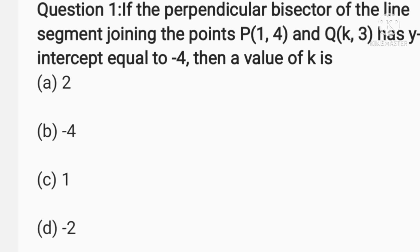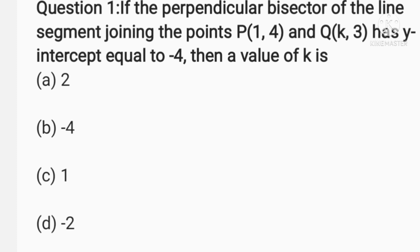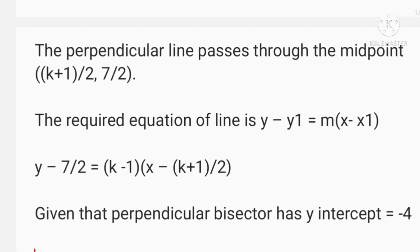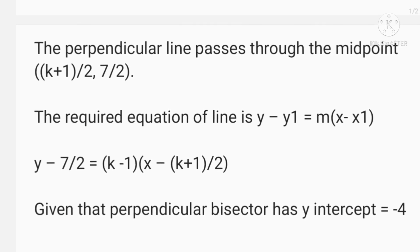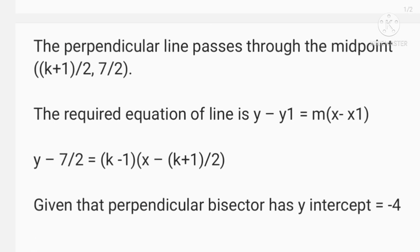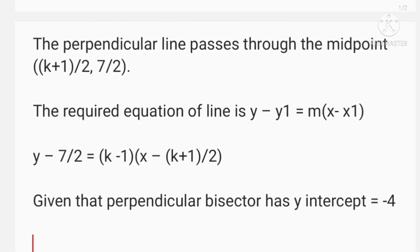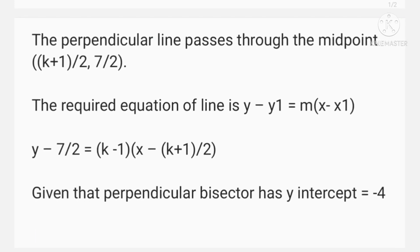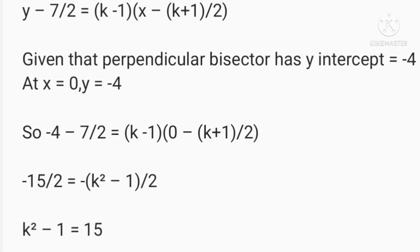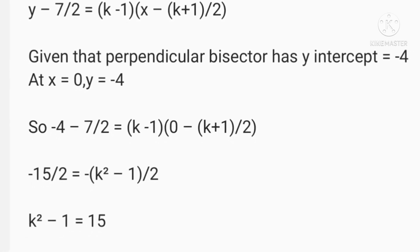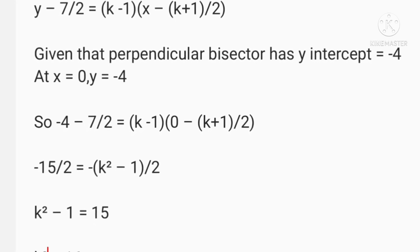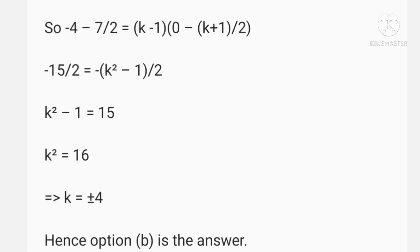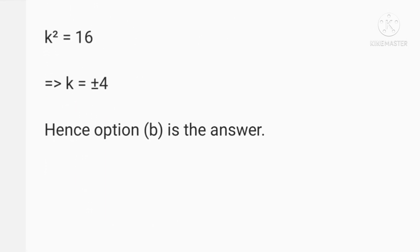It's given that the perpendicular bisector of the line segment joining P and Q has y-intercept equal to -4. So the perpendicular line passes through the midpoint ((k+1)/2, 7/2). The required equation of the line is y - 7/2 = (k - 1)(x - (k+1)/2). Since the y-intercept is -4, the point (0, -4) lies on this equation. Substituting, we get k² - 1 = 15, so k² = 16, giving k = ±4. Hence option B is the answer.